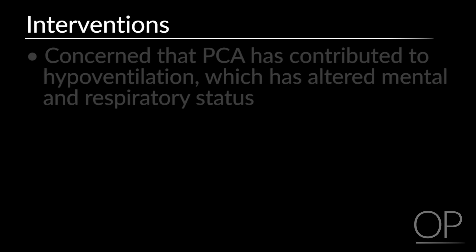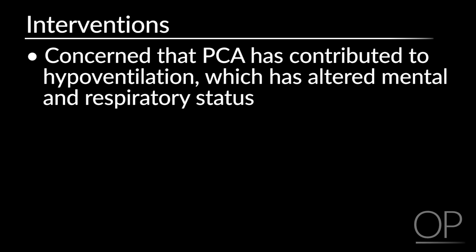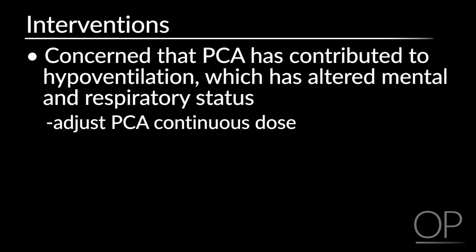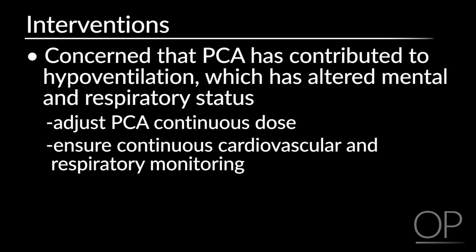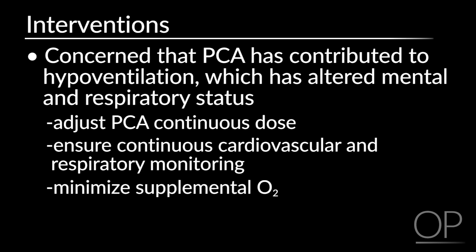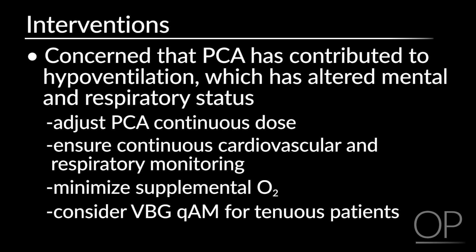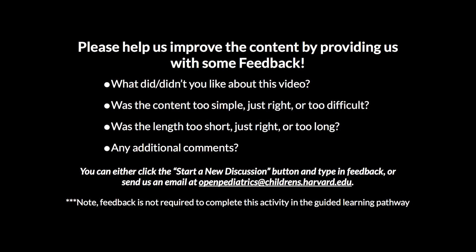Interventions to initiate: for this patient, you are concerned that the PCA has contributed to hypoventilation that has altered the patient's mental status and respiratory status. Interventions include adjusting the continuous dose of the PCA, ensuring continuous cardiovascular and respiratory monitoring, minimizing supplemental oxygen, and considering a VBG each morning for tenuous patients. Elevated CO2 in the bone marrow transplant patient can be an unrecognized warning — be aware. Consider mucositis causing upper airway obstruction with decreased respiratory drive due to medications. Thank you for watching this video on bone marrow transplant-specific electrolyte complications.